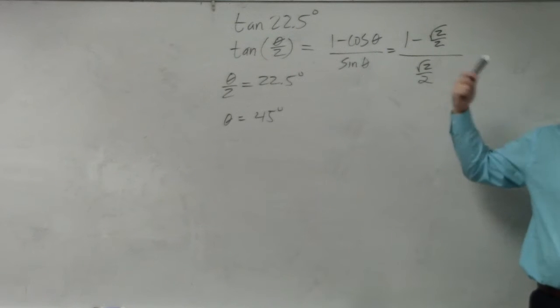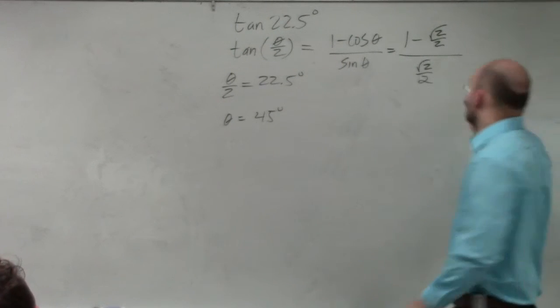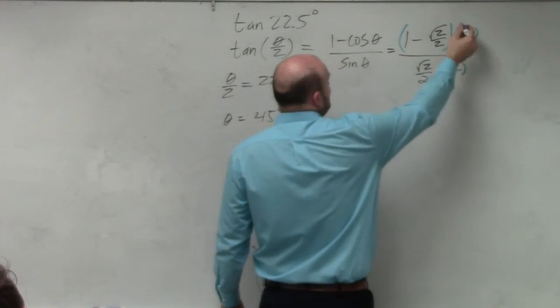So therefore, I should multiply everything by what to get rid of those 2s in the denominator? I should multiply by 2 in the numerator. You could think of it as the reciprocal. So I'm going to multiply by 2 in the numerator and the denominator.